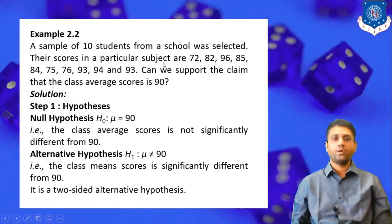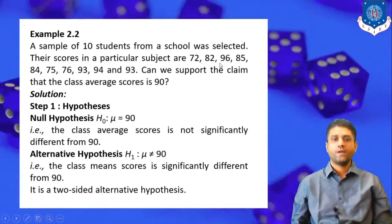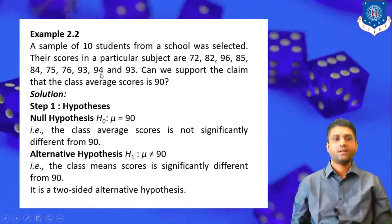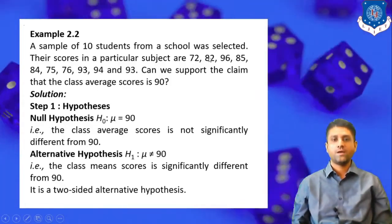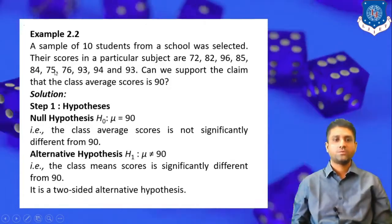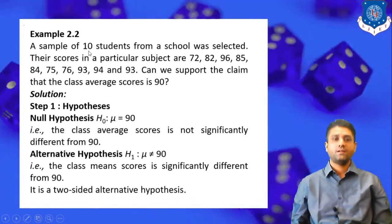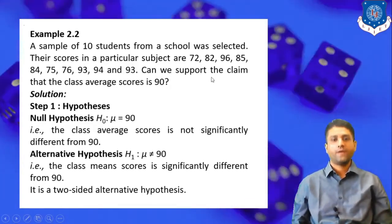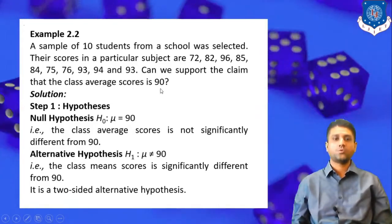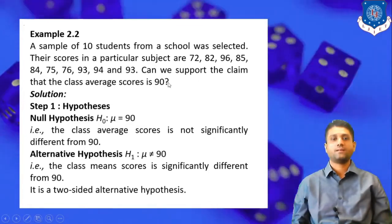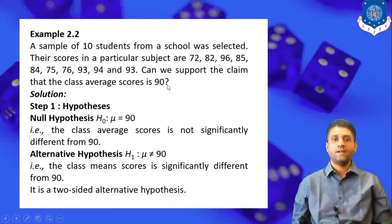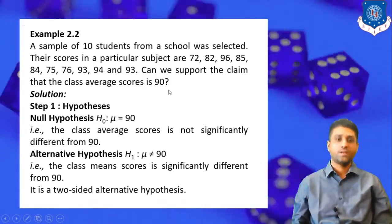Their scores in a particular subject are 72, 82, 96, 85, 84, 75, 76, 93, 94, and 93 — that is 10 scores. The question suggests that the sample of 10 students is collected and their scores are given. Can we support the claim that the class average score is 90? We have to check whether the average score is 90 or not.